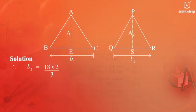Therefore, B2 equals 18 multiplied by 2 upon 3. That equals 12.